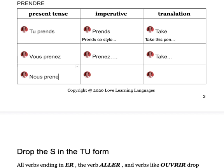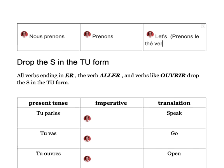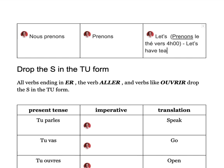We also have the nous form. Remember, this is a suggestion. Nous prenons — we take — becomes prenons. So you might say 'prenons le thé vers quatre heures.' Remember, the verb prendre doesn't always mean 'to take' — it can also mean 'to have' when talking about food and drink. So that means 'let's have tea around four.'